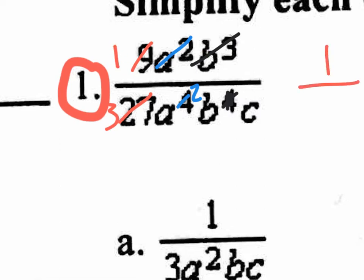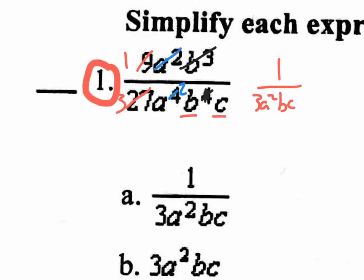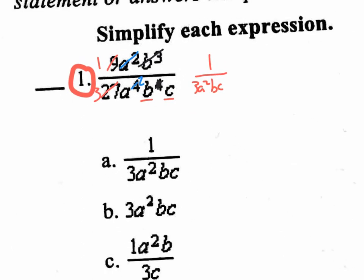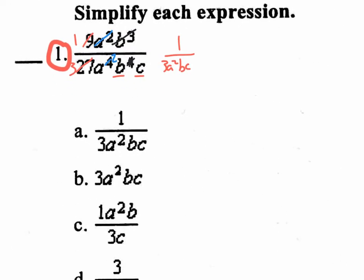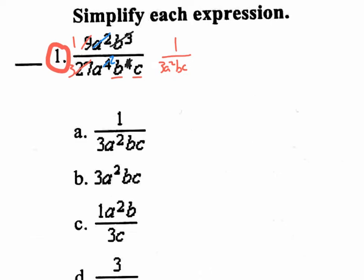On the bottom, we have a 3, an A squared, a B to the 1, and a C. So the final answer is 3A²BC. That's your final answer for question number 1. There's going to be one of those easy ones where you just cancel things out on the next quiz.